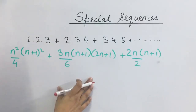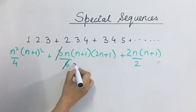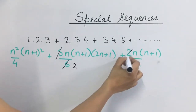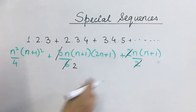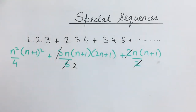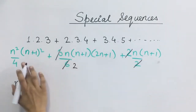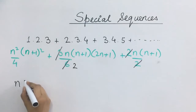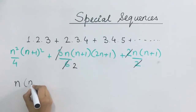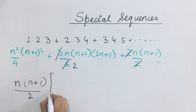Isko yadi hum thoda simplify karein, toh the 2 will be cancelled here. Ab is poori series se hum kuch terms common le sakte hain. Yadi hum n lete hain, n is common to all the terms; n plus 1 is common to all the terms; aur base mein 2 common hai. Toh yeh hum ne common le liya.